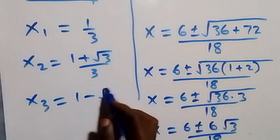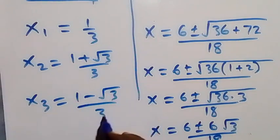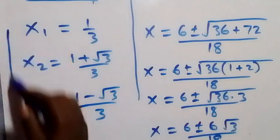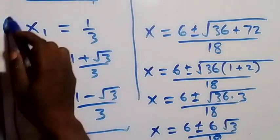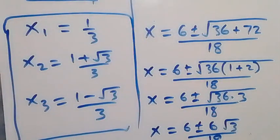So all together we have three solutions: x₁ equals 1 over 3, x₂ equals 1 plus root 3 over 3, and x₃ equals 1 minus root 3 over 3. We have come to the end of this problem. Thank you for watching. Don't forget to subscribe for more videos, turn on the notification bell, share this video, give it a thumbs up. See you in the next class, bye for now.